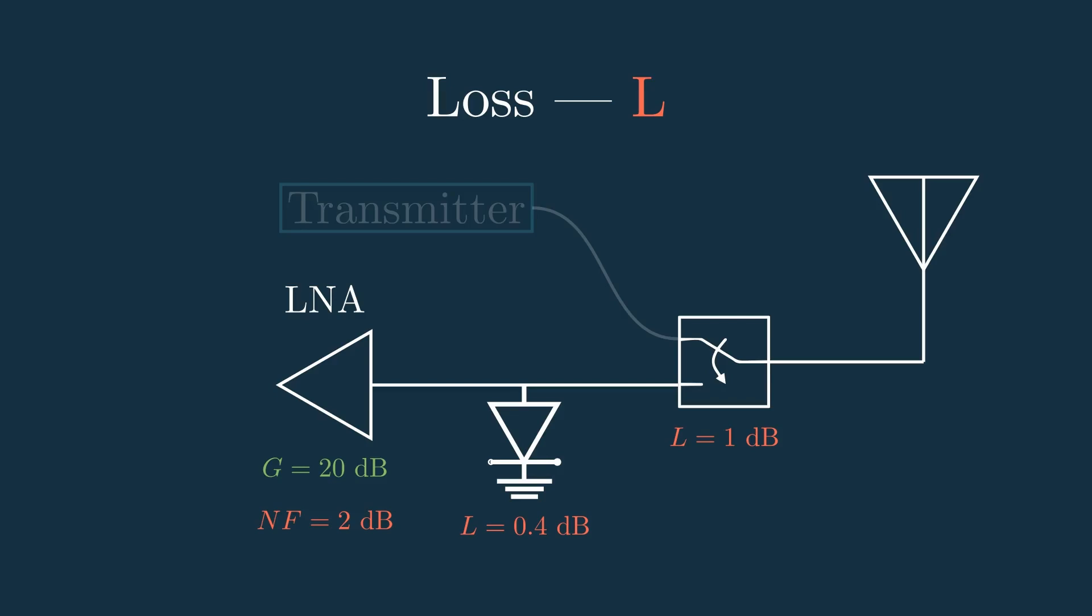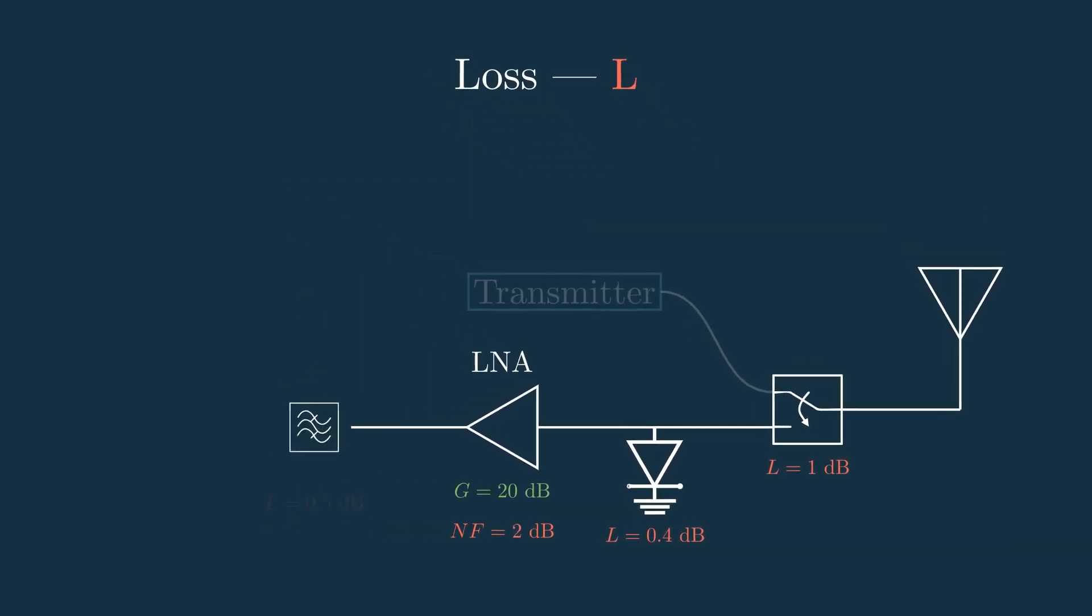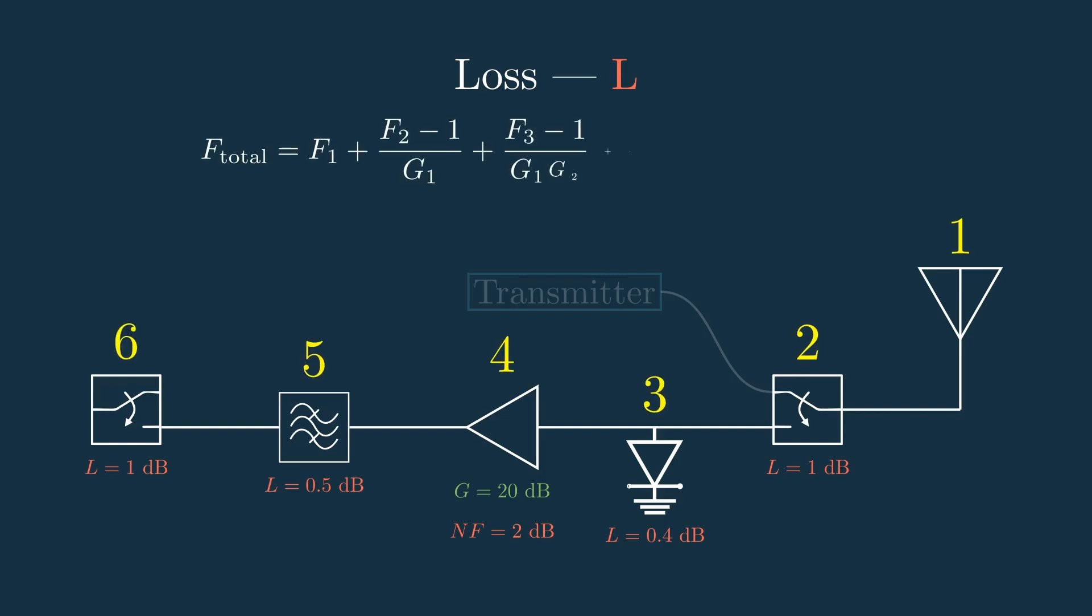This system architecture can vary a lot and will often have even more components than this, each adding their own gain or loss and some noise. All these losses and any losses or inefficiencies before the antenna will combine to form that L term, and the noise will form a full receiver noise factor.